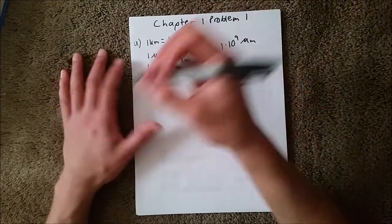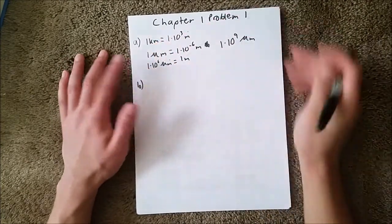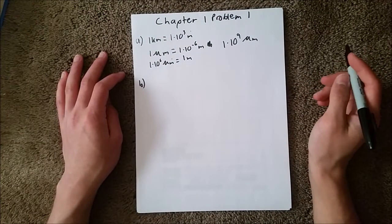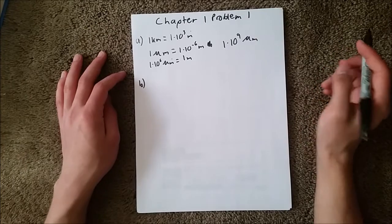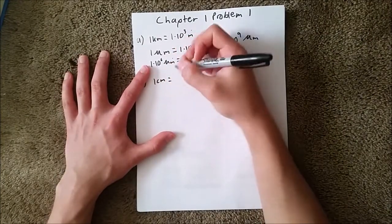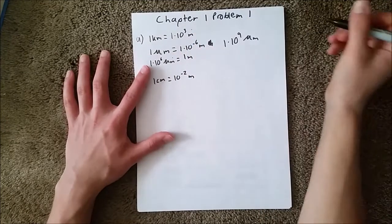All right, and so for part B, we are asked to find what fraction of a centimeter equals one micrometer. Okay, so one centimeter is equal to 10⁻² meters.